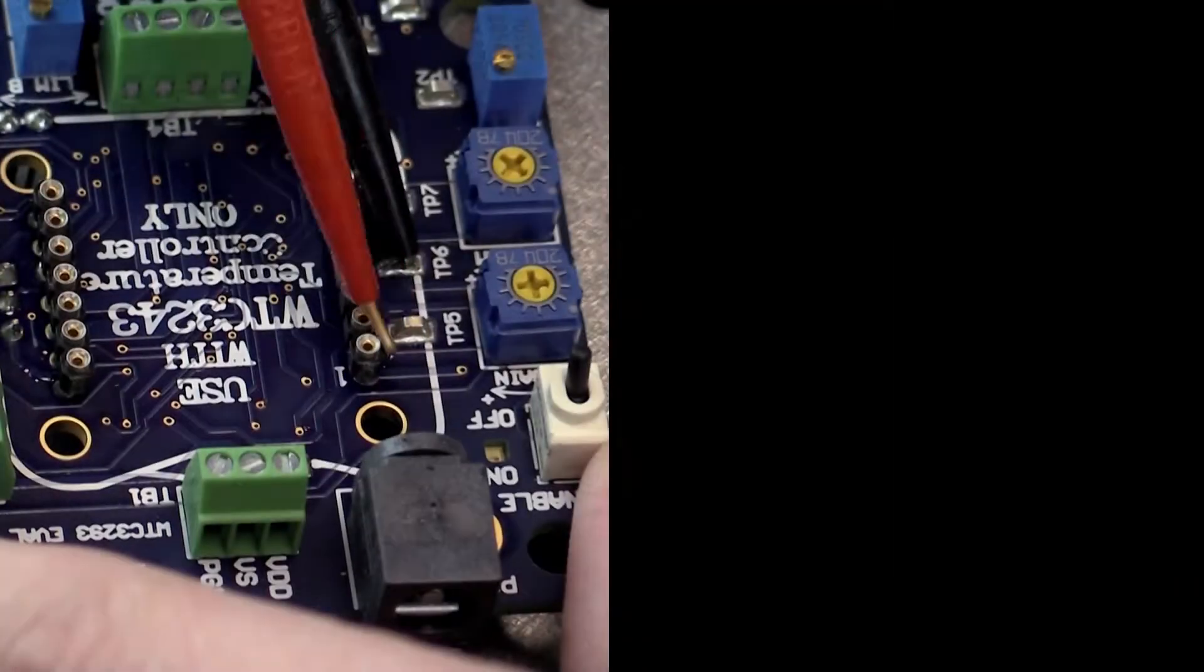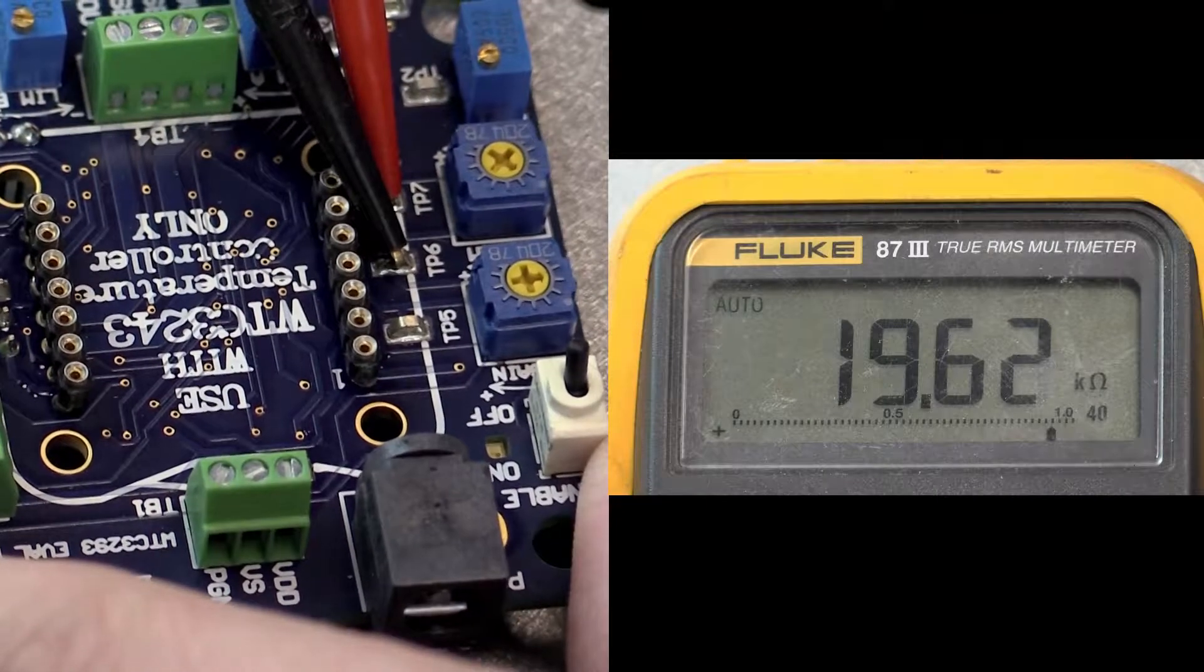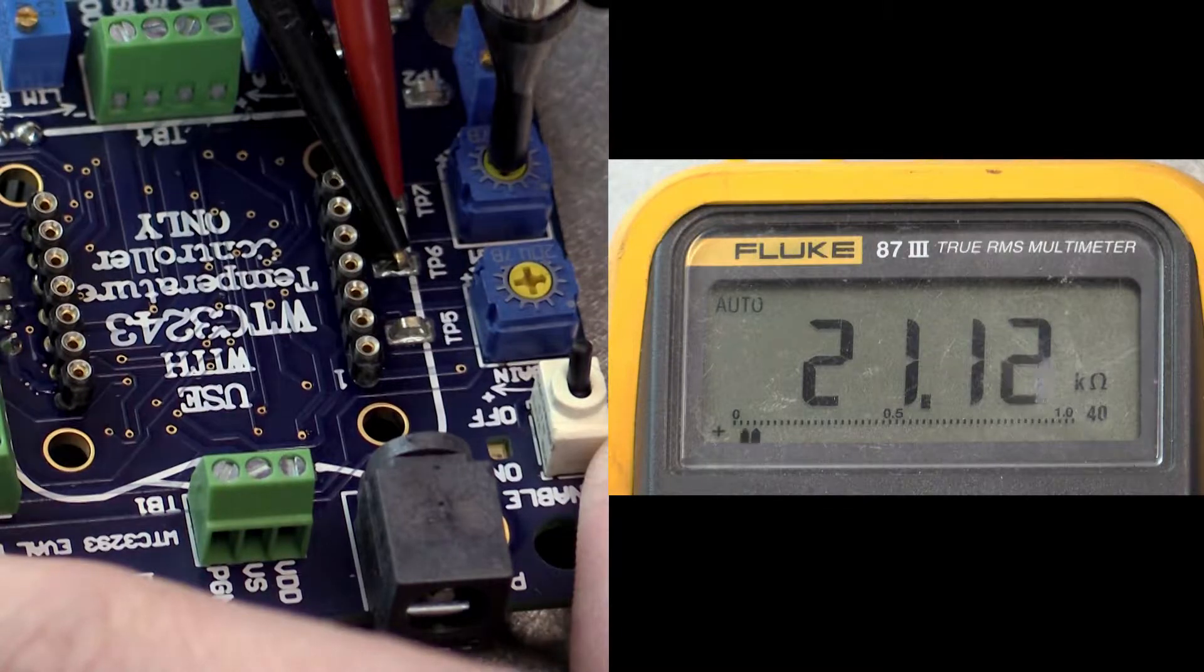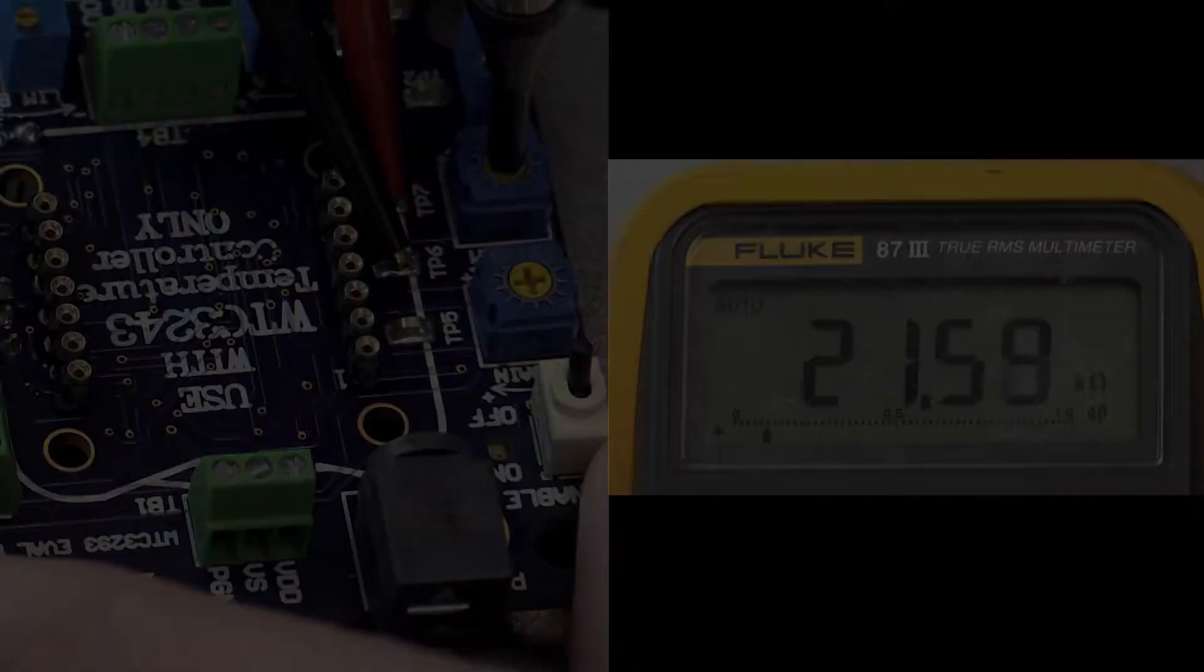To adjust the I-term, use an ohmmeter to measure the resistance between test points TP6 and TP7. Adjust the I-term trim pot to the calculated resistance.